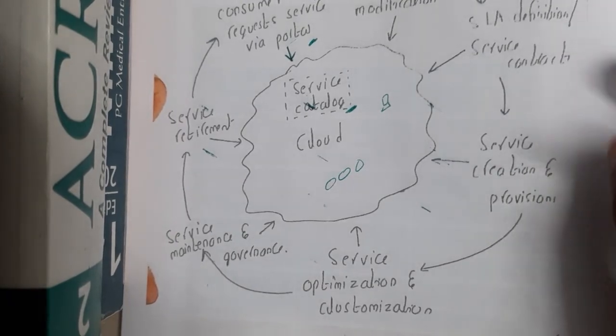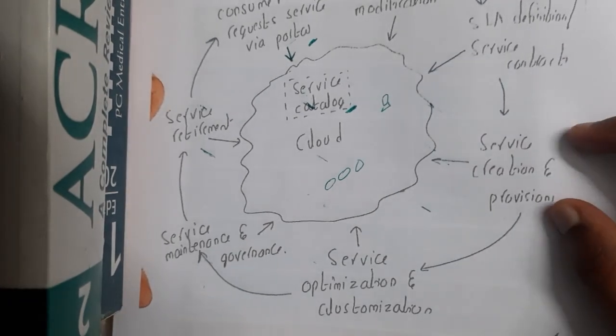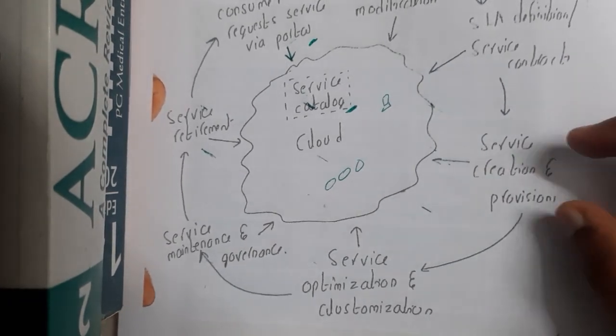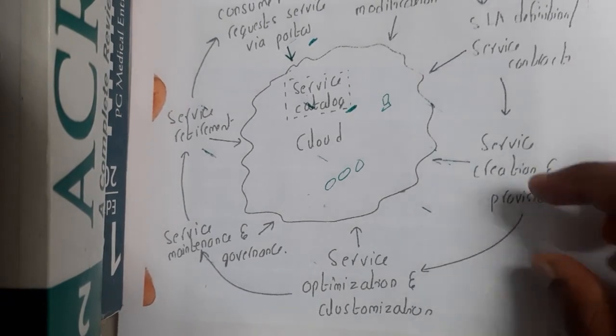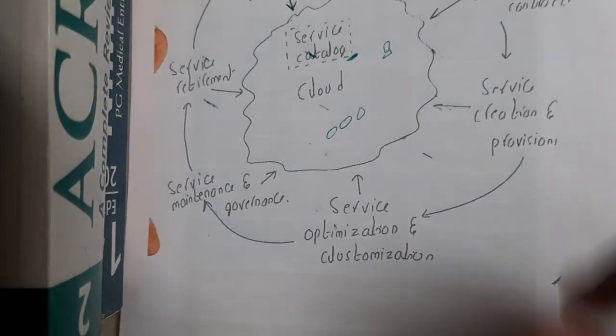Once that is done, the service creation and provision will be given for you. Whatever contract you have given, your payment and everything will include there itself. Once everything is done, they will start providing you the things - the storages, the RAM, and everything they will be assigning to your account. Once that is done, service optimization and customization begins.